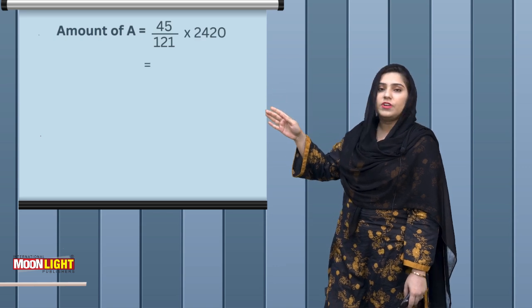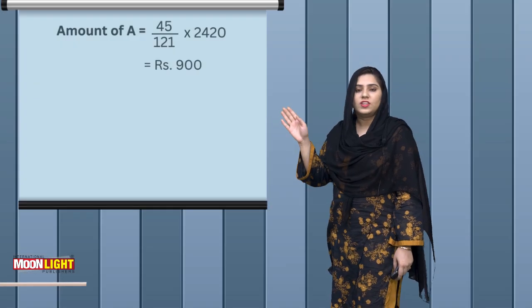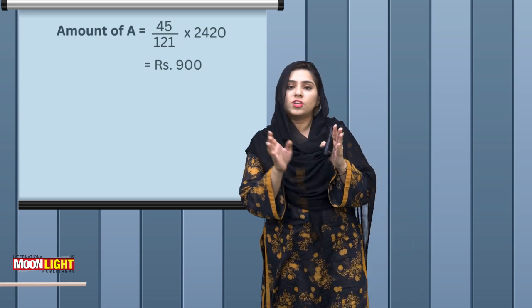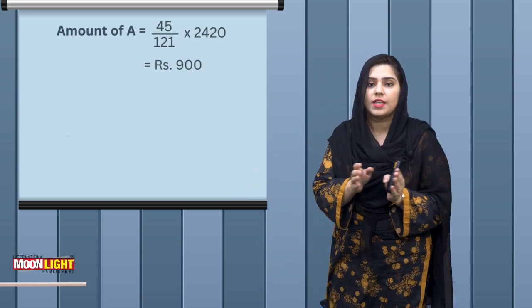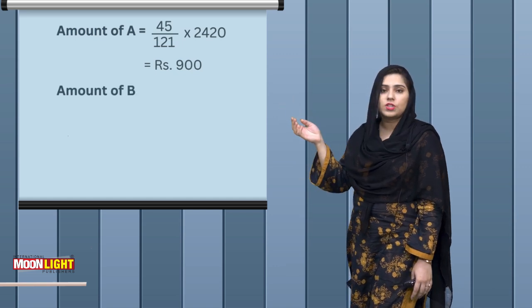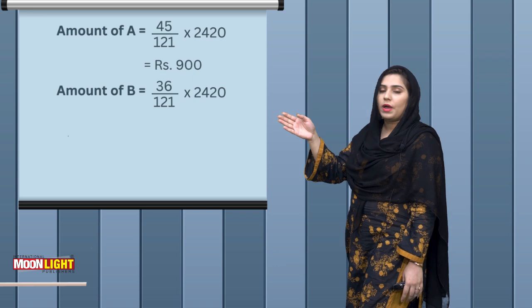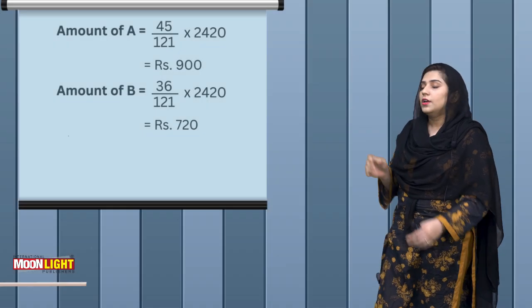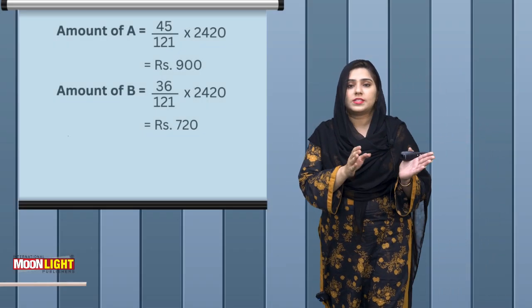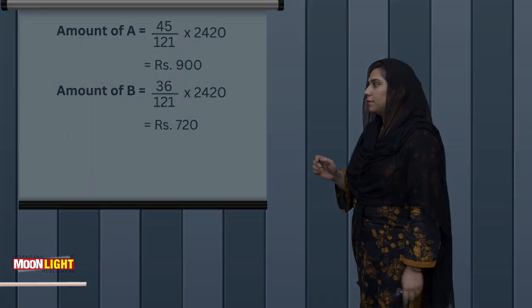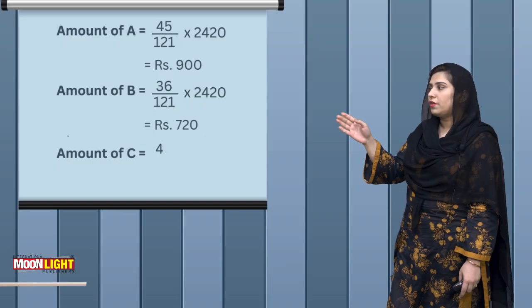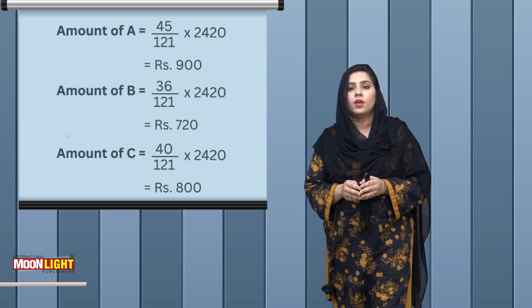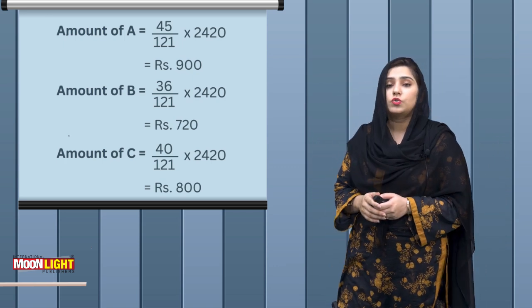Person A's share: 45 divided by 121 multiplied by 2,420 equals 900 rupees. For person B, whose ratio is 36: 36 divided by 121 multiplied by 2,420 equals 720 rupees. For person C: 40 over 121 multiplied by 2,420 equals 800 rupees.